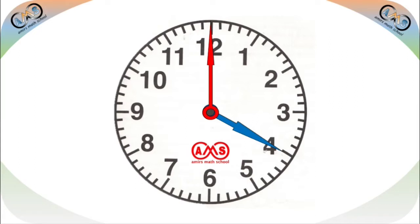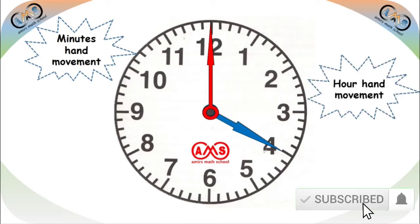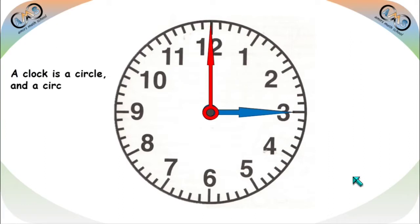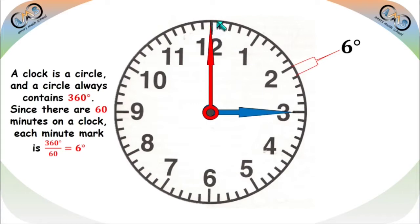To calculate the angle between the minute hand and hour hand, we consider the minute hand movement, the hour hand movement, and the relation between them. A clock is a circle, and a circle always contains 360 degrees. Since there are 60 minutes on a clock, each minute mark is 360 divided by 60, equal to 6 degrees. So each minute equals 6 degrees of angular movement.